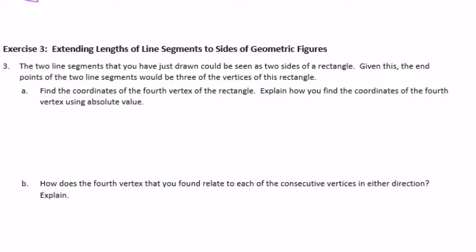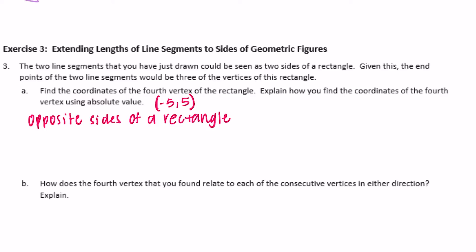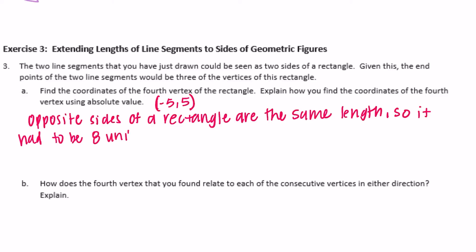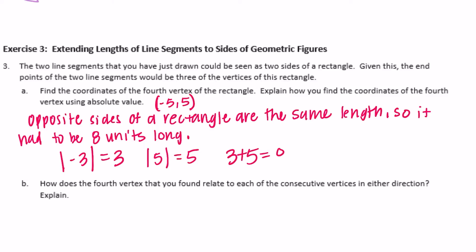We can explain using absolute value. The fourth vertex would be (negative 5, 5). Opposite sides of a rectangle are congruent — same length — so it had to be 8 units long. We found the absolute value of negative 3 is 3, and the absolute value of 5 is 5. Then we added them because they were on opposite sides of 0, giving us 8 units.